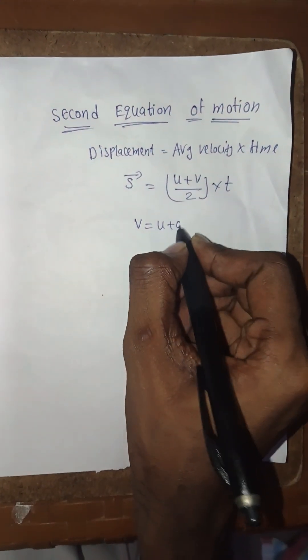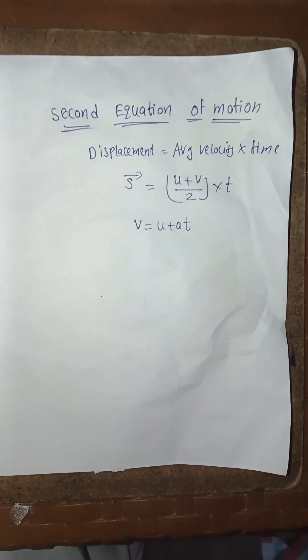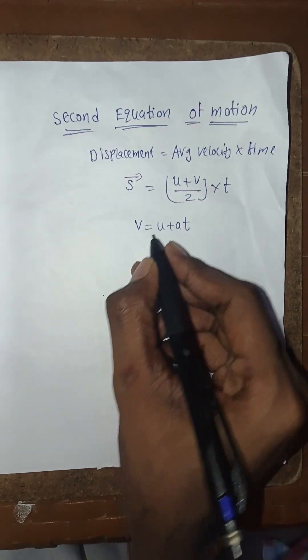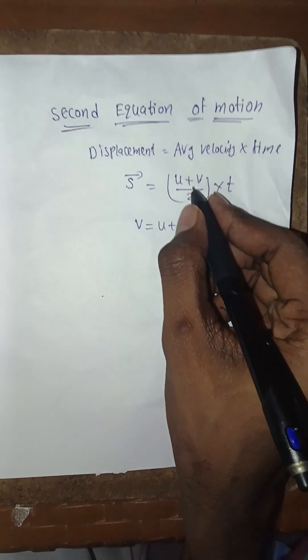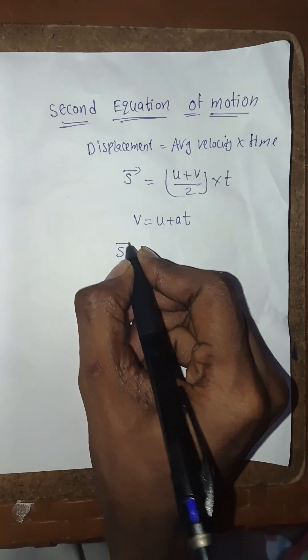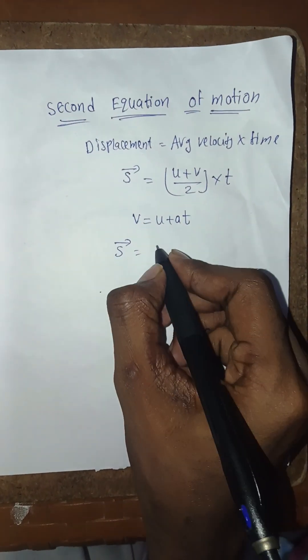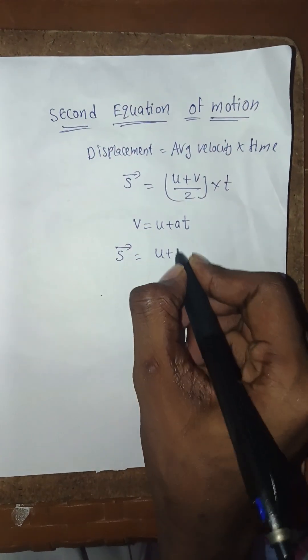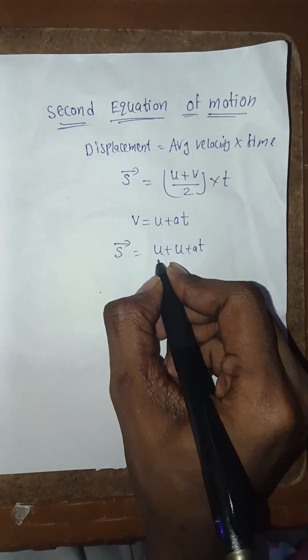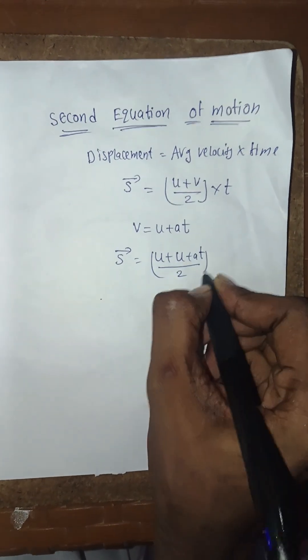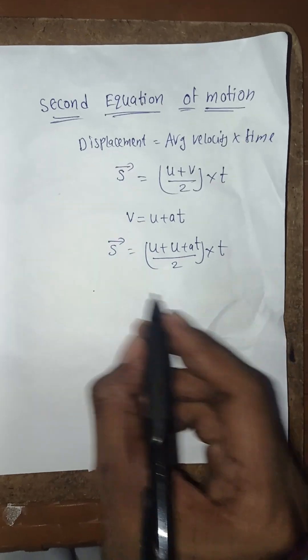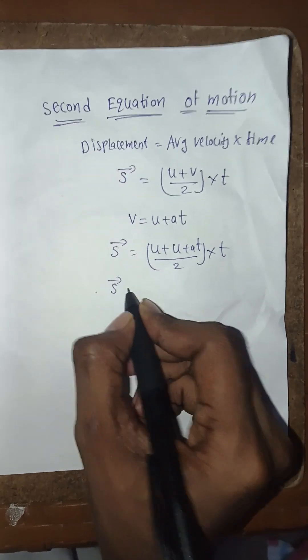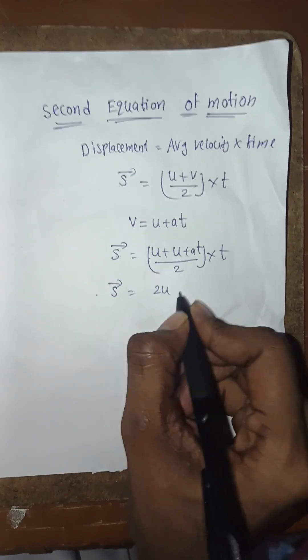Now we substitute this v value into the equation. So s = (u + u + at)/2 × t. This gives us s = (u + u + at)/2 × t.